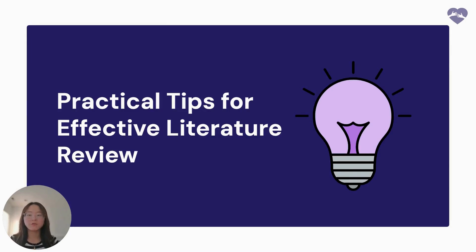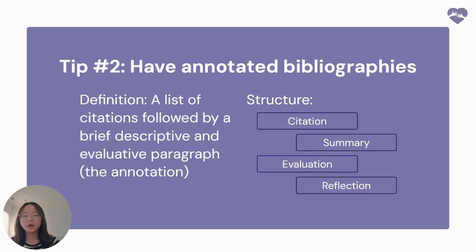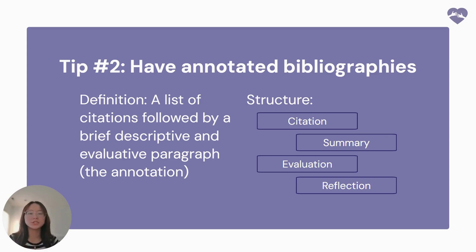Here are some practical tips for effective literature review. One of the most important is staying organized. You can use tools like Zotero and Mendeley to help you store, organize, and format citations effortlessly — create folders for different sections of your research, tag sources with keywords, and generate citations automatically in your desired format. This helps you stay on top of all the studies you're reviewing without losing track of important information. Another tip is to use annotated bibliographies, which are a great way to deepen your understanding of the literature. An annotated bibliography has four parts: cite your source, then provide a summary of the main points, include an evaluation discussing the source's credibility, relevance, and quality, and finally add your own reflection on how the source contributes to your research. This not only helps you organize your thoughts but also ensures you critically engage with the material, making it easier to synthesize your findings later.